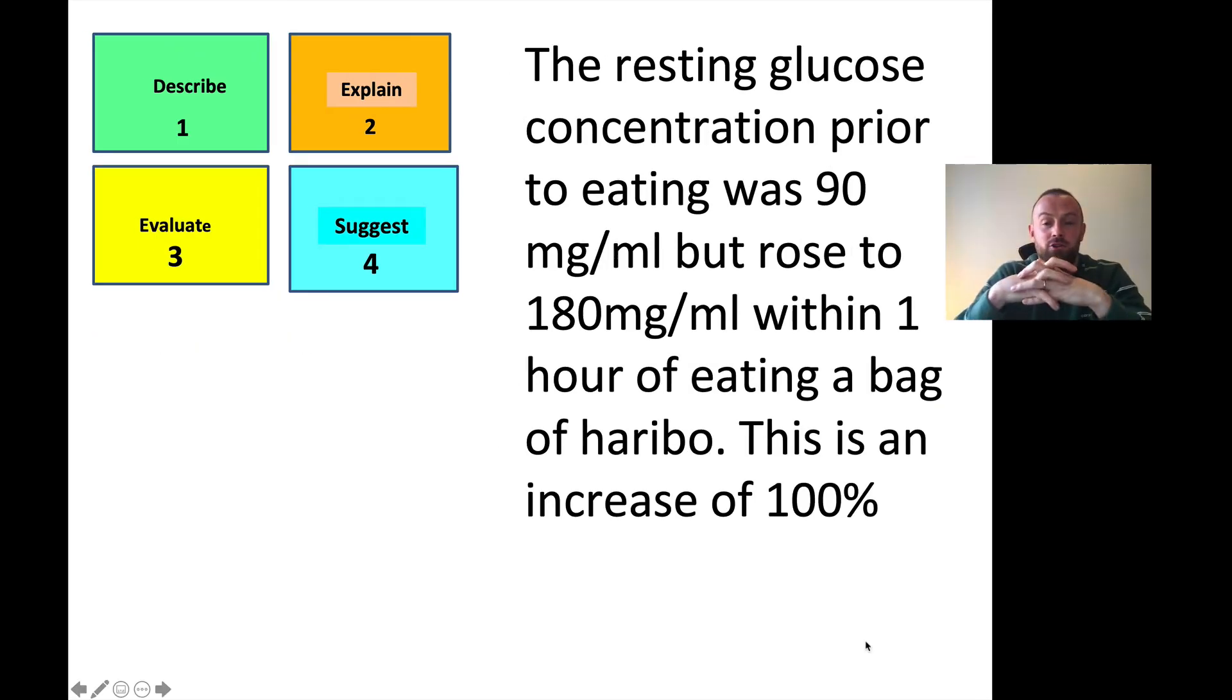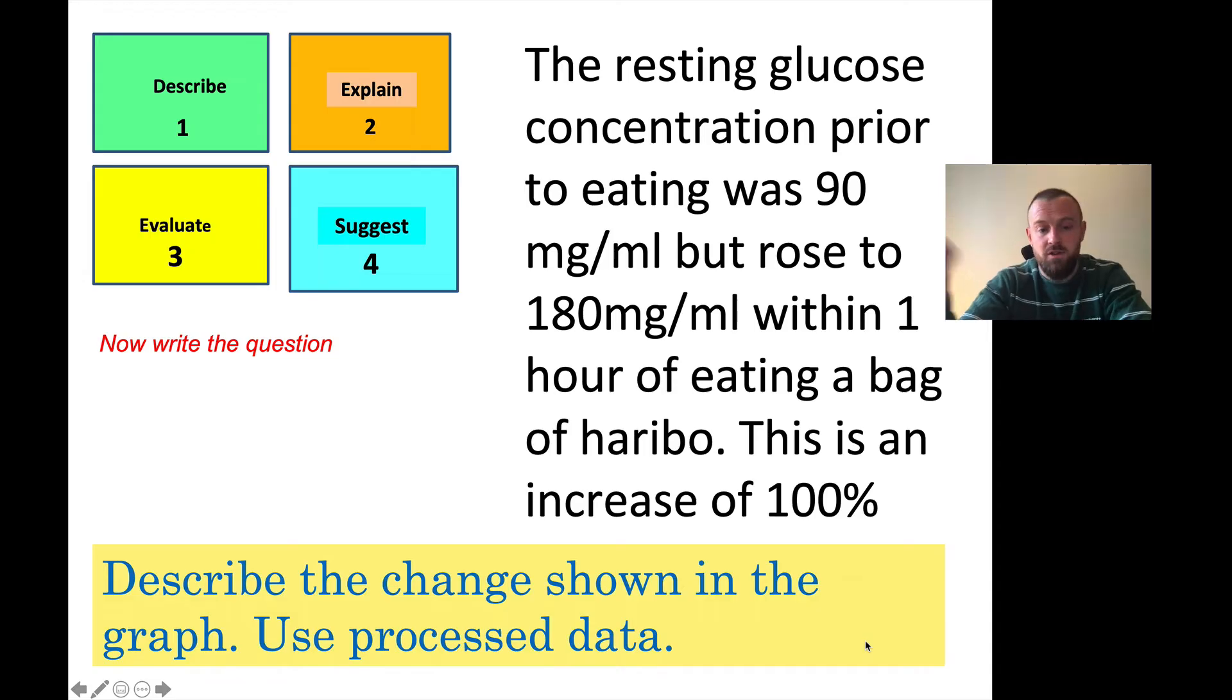Here, the resting glucose concentration prior to eating was 90 milligrams per milliliter, but rose to 180 milligrams per milliliter within one hour of eating a bag of Haribo. This is an increase of 100%. That's the answer - what type of question is this? You might have got it. That one's a describe, but what type of question would this be? See if you can think about what the question would be. OK, so this would probably be something about reading from a graph: describe the change shown in the graph, and it might say use processed data. That's something else that can come up as an exam technique point. If it says use processed data, it basically means you need to do some maths with the numbers, not say it goes from this to this, but say the percentage increase or something like that. Normally it's percentage increase. Final one here.